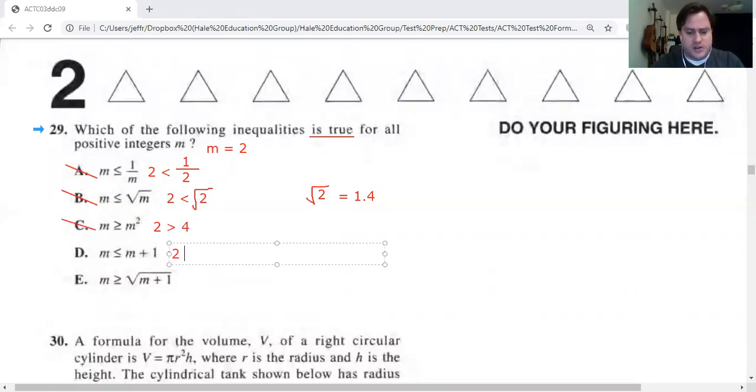Answer choice D. We're going to get 2 is less than 2 plus 1, which is 3. Now that is true, but I am not going to just circle it and move on yet, because it's possible that there are values of M that might make this false. I don't know. I'm just going to keep it and analyze answer choice E.